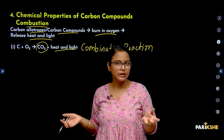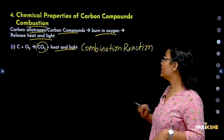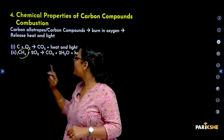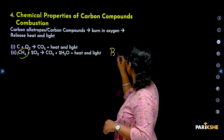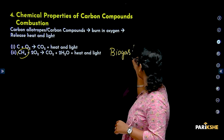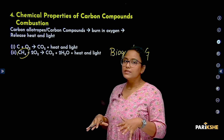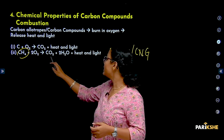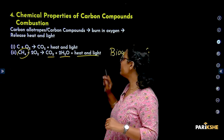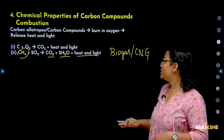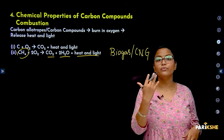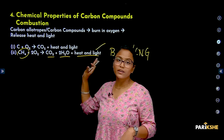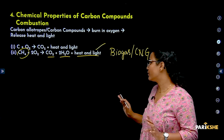Two reactants are combining to form a single product. Another compound in a combustion example is methane. Methane is an important component of biogas or compressed natural gas (CNG). Methane combusts in the presence of oxygen to give carbon dioxide and water, along with the release of lots of heat and light. This is why carbon compounds are used as fuels — they release so much heat and light energy. Make sure you write the balanced equation.